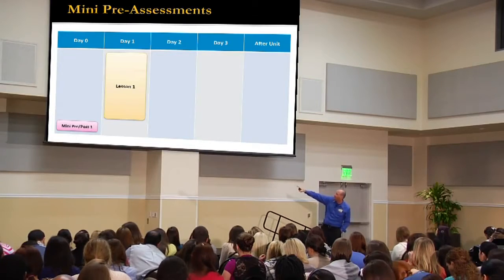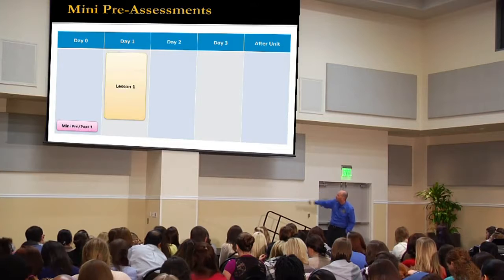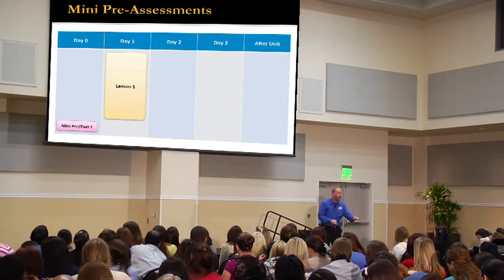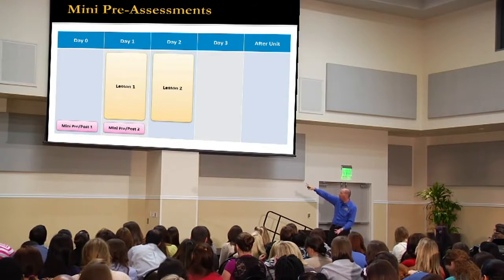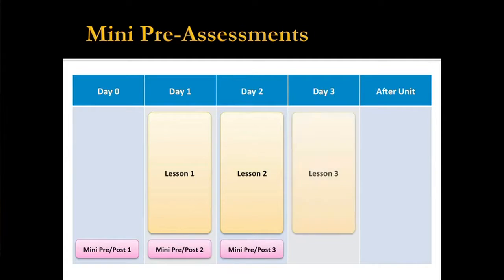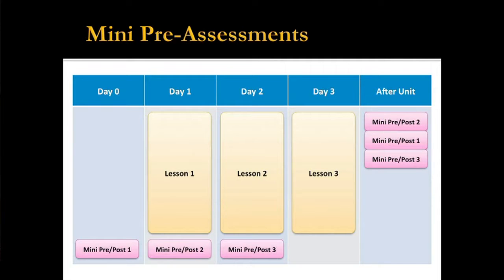Imagine you take a mini pre-assessment before you start, then you have your first lesson, and at the very end of the first lesson another mini pre-assessment for lesson two, then a mini-assessment for your third lesson, and so on. On the last day, combine all the mini-assessments — now you can compare those, and that becomes your post. You can even combine this model with the other one, add some additional items, and now you've got a full unit assessment with all the comparable items built in along the way.